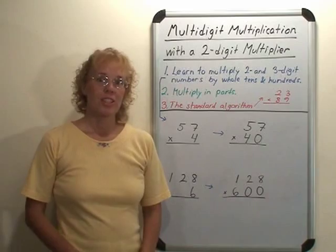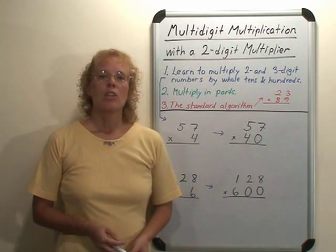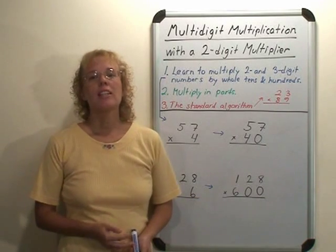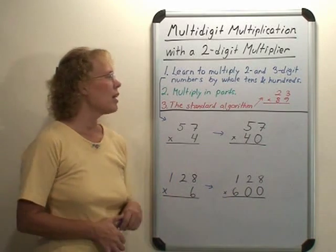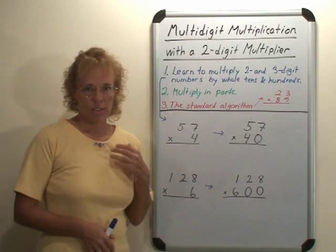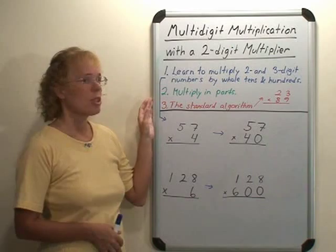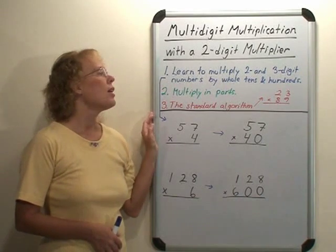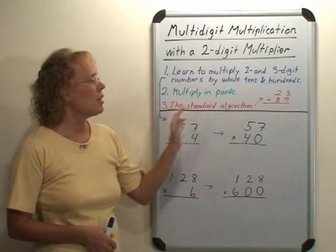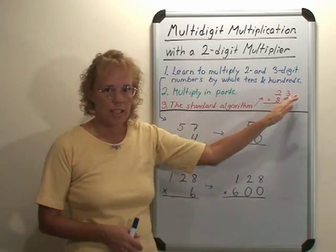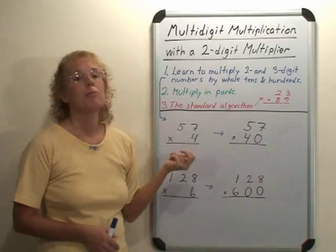Now this assumes that the student already knows how to multiply, for example, 5 times 78 or 3 times 217. In other words, when we have a one-digit multiplier. I like to teach this in three different steps. The first step is to learn to multiply two and three-digit numbers by whole tens and hundreds. Next we will study multiplying in parts, and lastly we come to the standard algorithm, which looks like 23 times 89 or a three-digit number on top, for example 717 times 45.